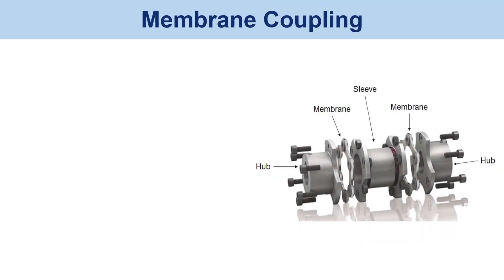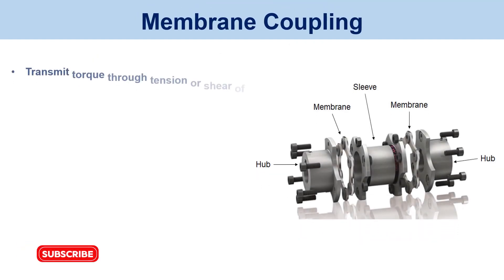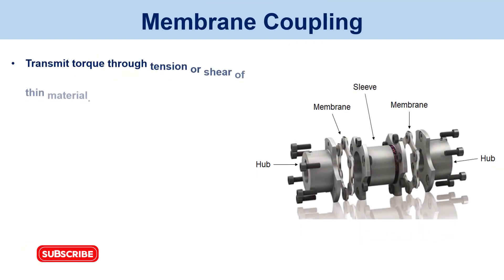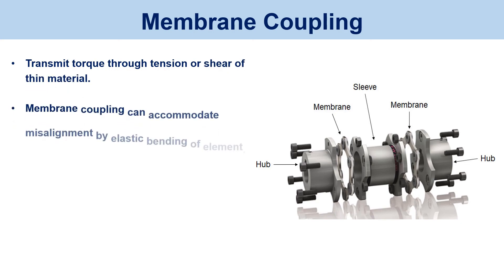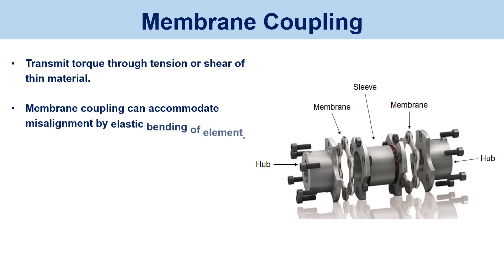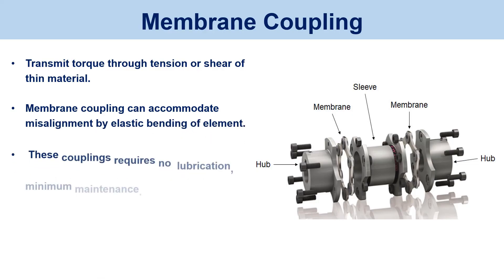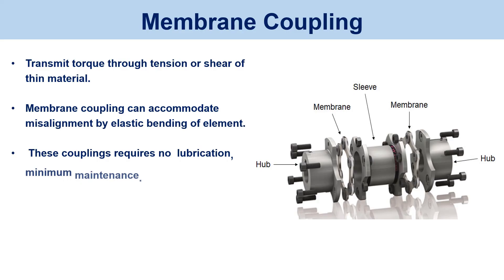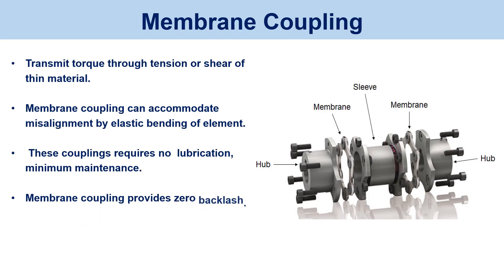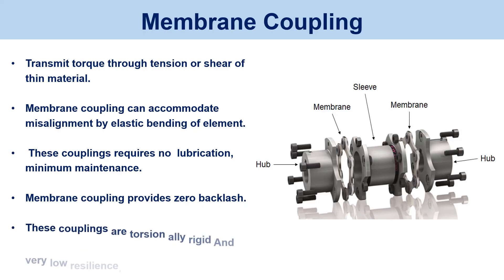Membrane coupling. Membrane couplings transmit torque through tension or shear of thin material and can accommodate misalignment by elastic bending of the element. These couplings require no lubrication and minimum maintenance. Membrane coupling provides zero backlash and is torsionally rigid with very low resilience.